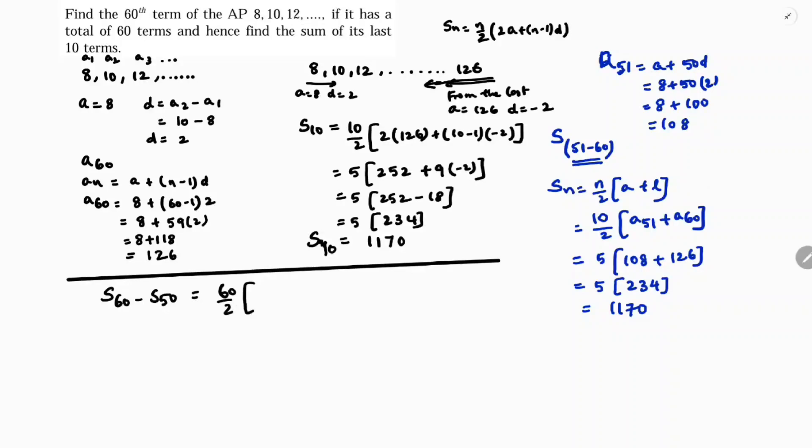So 60 by 2 into 2A. A is 8 plus 60 minus 1 into D which is 2, minus 50 by 2 into 2A. A is 8 plus 50 minus 1 into 2. This is 30 times 16 plus 59 into 2. 59 times 2 is 118, minus 25 times 16 plus 98.